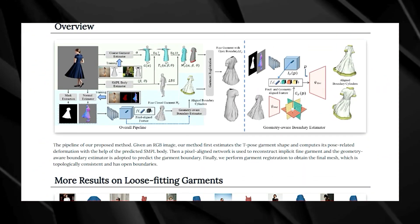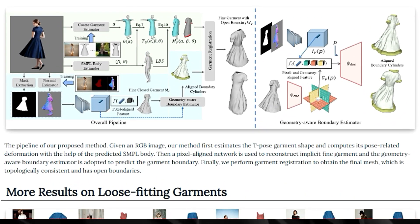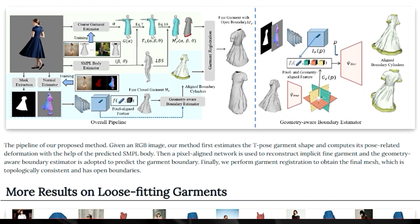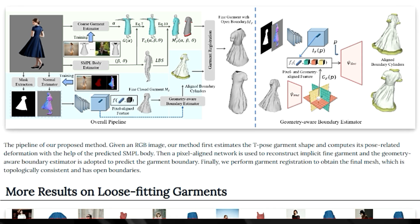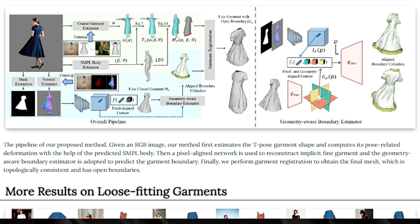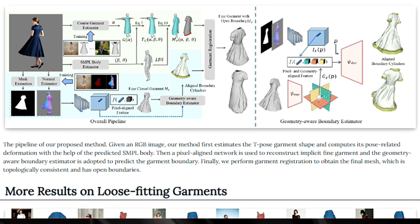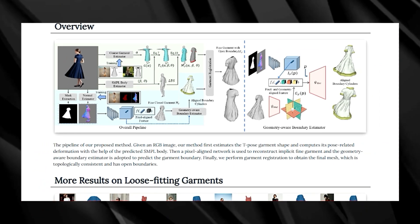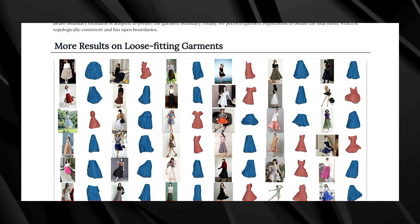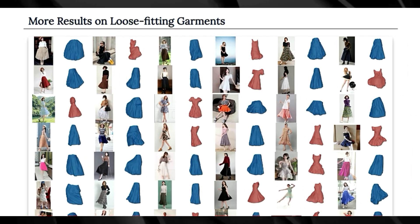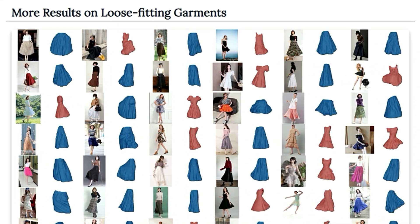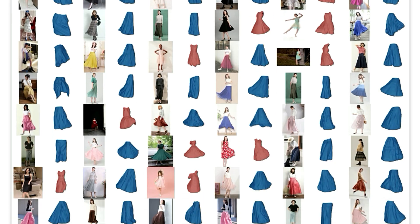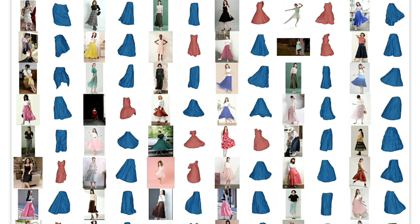The researchers also tackled the challenge of real-world images, where clothing often has complex deformations and poses. They trained the model on a massive dataset of paired images to ensure it could handle the variation in pose, lighting, and even occlusion found in everyday photos. The Garver Solod method can reconstruct stand-alone garment pieces with impressive detail and realism, even for loose-fitting garments. This technology could revolutionize how we design, experience, and shop for clothing in the digital world.